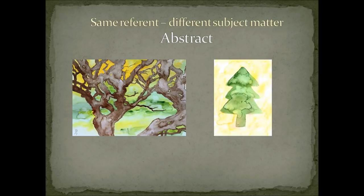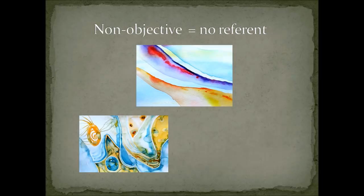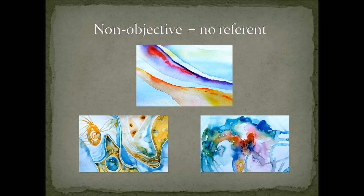Sometimes an artist wants to work with the elements and principles of design — such as line, color, texture, and shape — for their own sake, without using a referent. You might look at a non-objective work and see something real in it, but that may not be the artist's intention. Sometimes the term 'non-representational' is also used to describe work that does not use a referent.